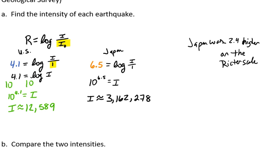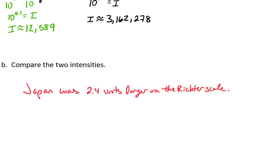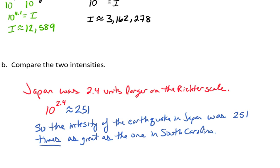So what we can see is that Japan was 2.4 higher on the Richter scale. If we compare these two intensities, Japan was 2.4 units larger on the Richter scale. 10 raised to the 2.4 is approximately 251. So the intensity of the earthquake in Japan was 251 times as great as the one in South Carolina, which is a lot.